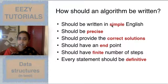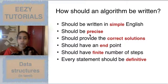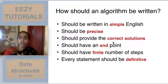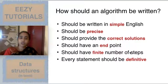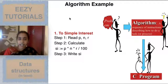When writing an algorithm, the language should be very simple — generally written in plain English. It should be small and precise, provide accurate solutions, stop at some point (have an endpoint), have finite quantifiable steps, and the statements should not lead to ambiguity — that is, it should be definite.